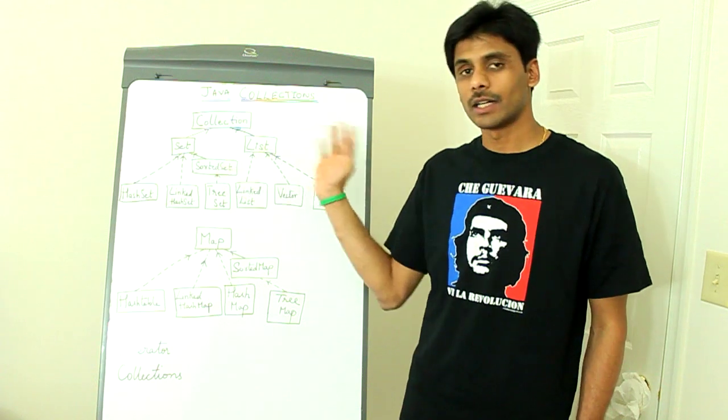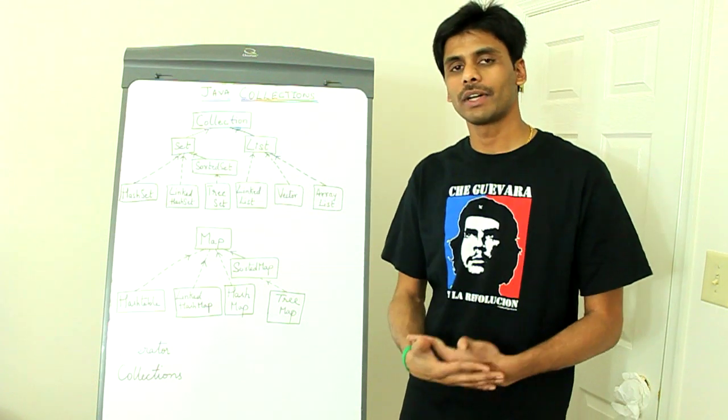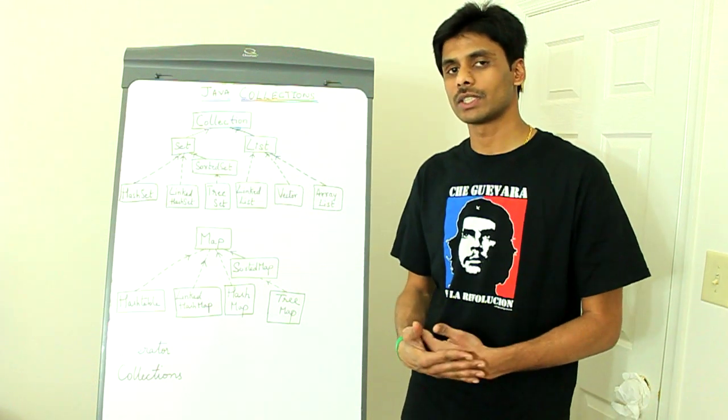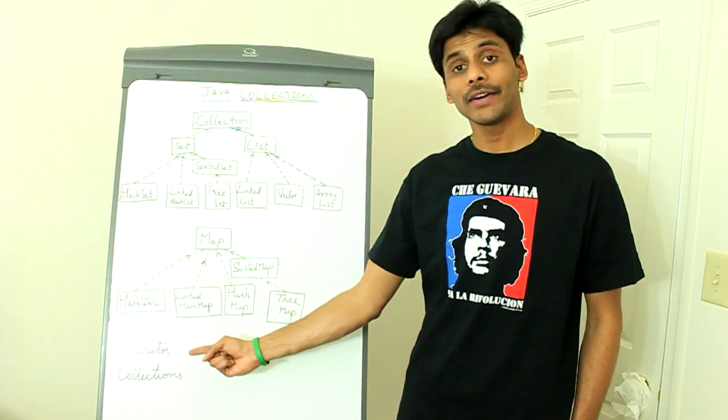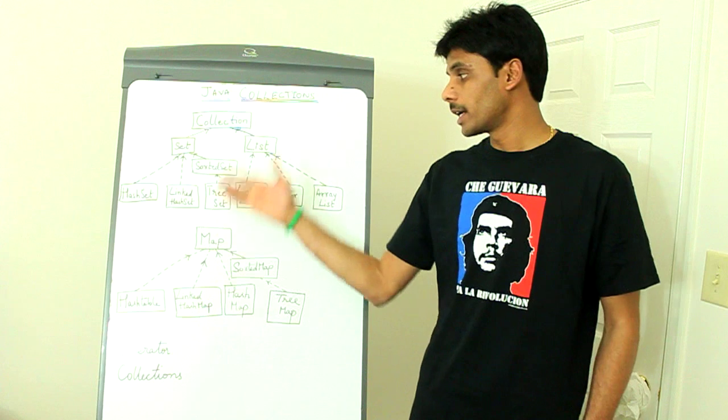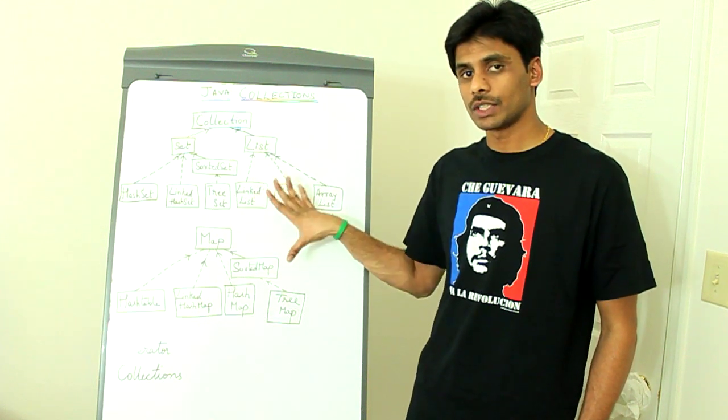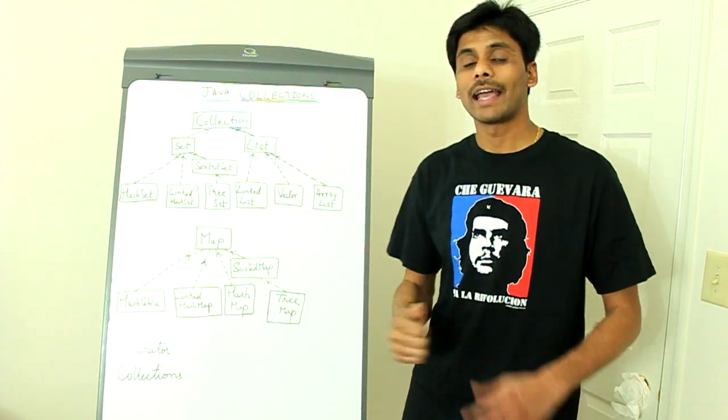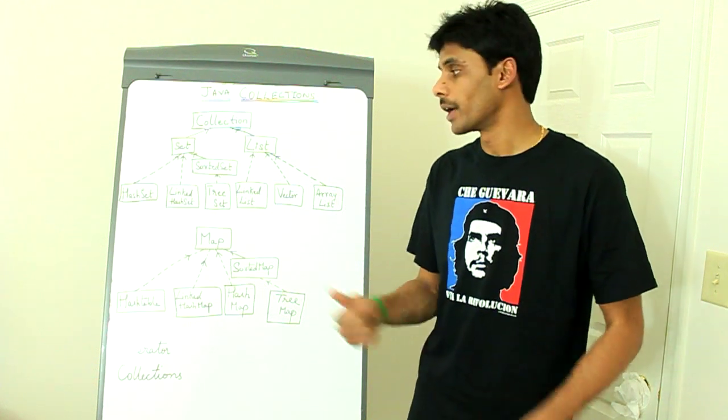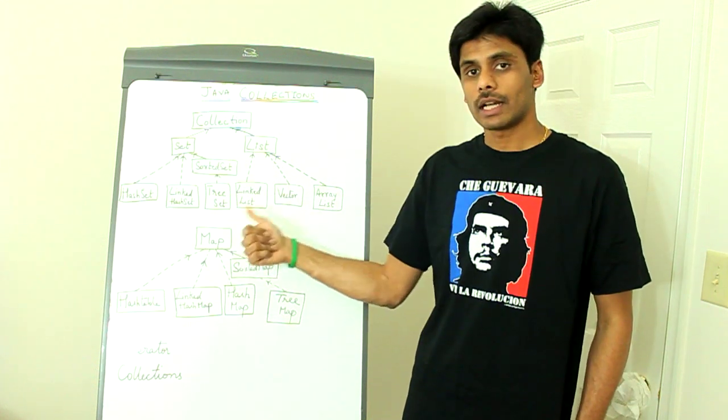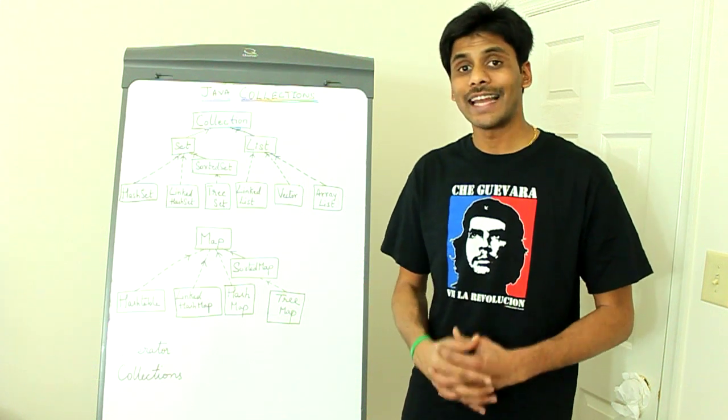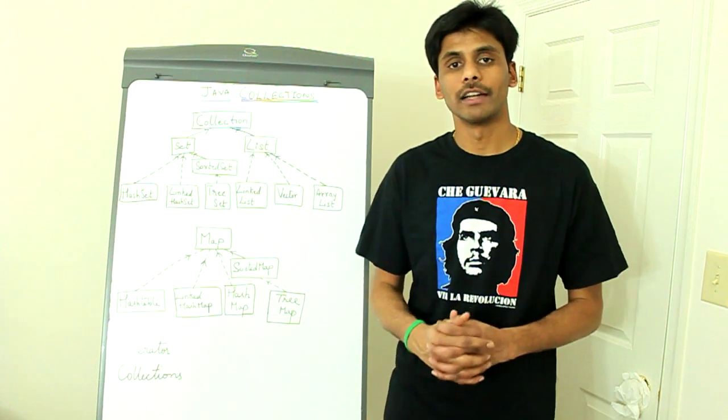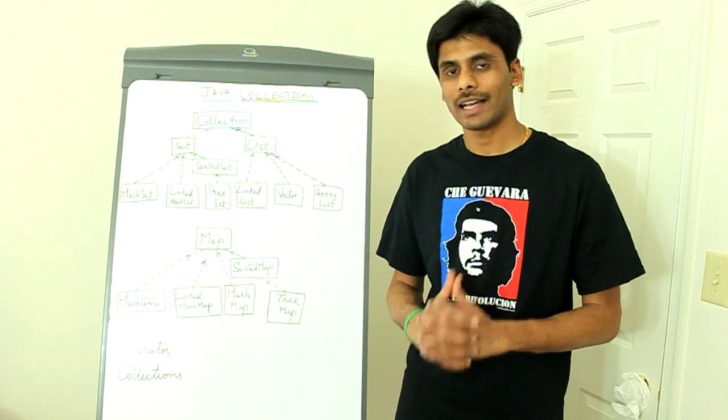These are utility methods which allow you to play around with the different collection classes. They will allow you to create a set out of a list and provide several other utility methods. The Iterator class is implemented by most of these collection classes. When you call a getIterator method on any of these classes, they provide you with the Iterator class which you can then use to iterate over all the different elements within that particular collection.